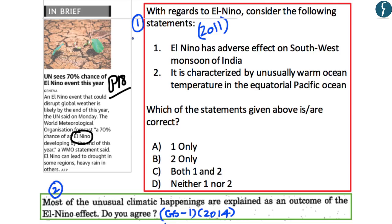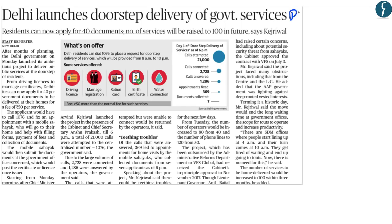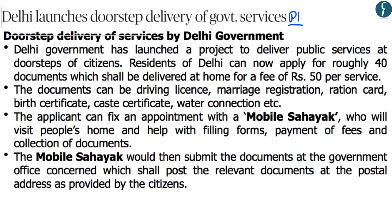The next article, from page 1, discusses the Delhi government's launch of a doorstep delivery of government services. Under this program, residents of Delhi can apply for roughly 40 government services or documents, which will then be delivered to their home.